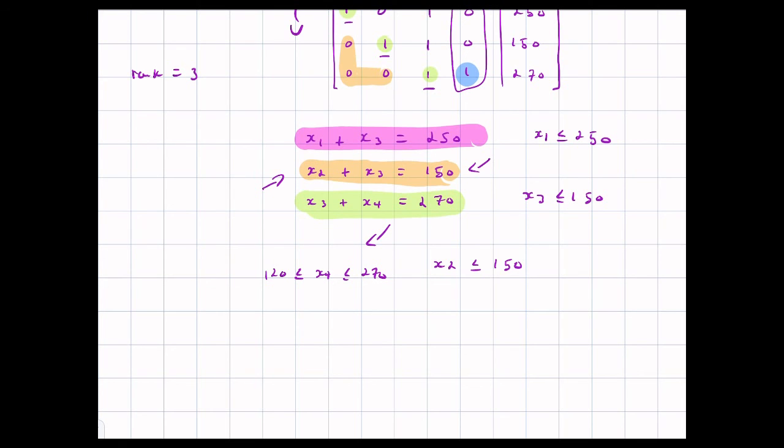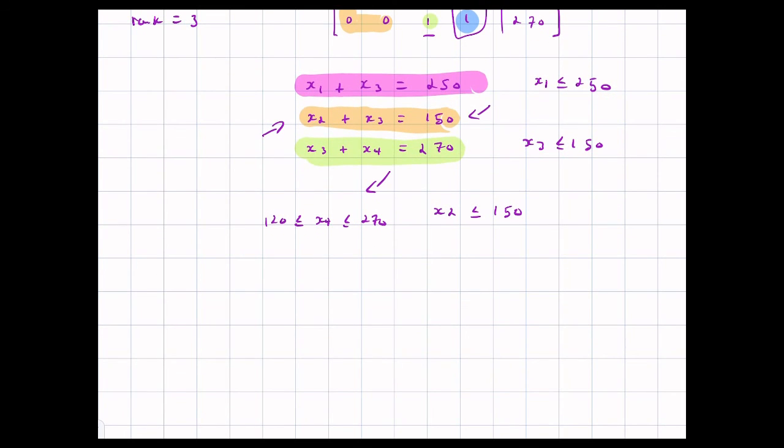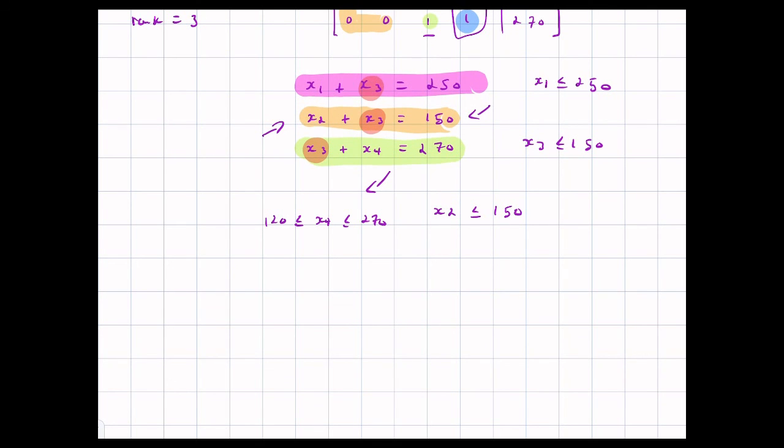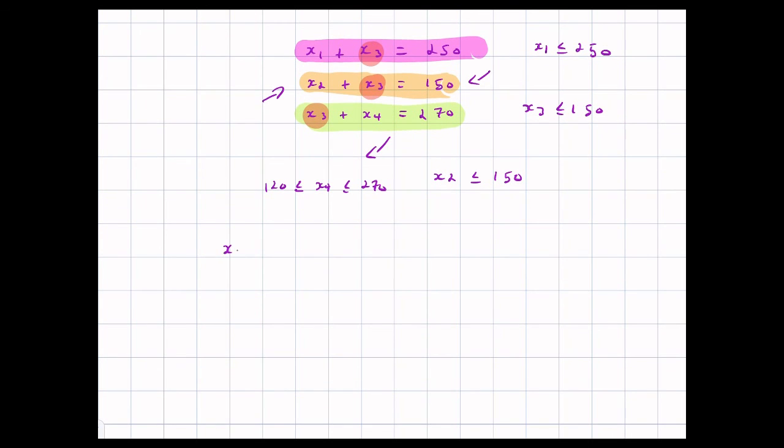So stuff like this allows us, we can just reason our way through and figure out the upper and lower bounds on all of these. Of course, if we want a particular solution to this, right? If we want to say, figure out like one particular set of numbers X1, X2, X3, X4, which satisfy this. Well, I can just sort of cheat and look at the X3s and say, okay, X3 is the one that appears in all of them. What if I just set X3 equal to zero, right? I can say X3 is equal to zero, and this determines all the rest of them. X1 is 250, X2 is 150, X4 is 270.